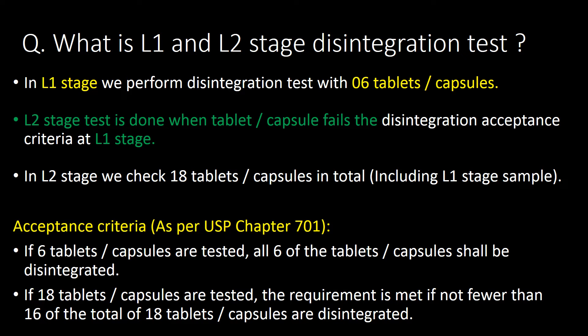What is L1 and L2 stage disintegration testing? In the L1 stage, we perform the disintegration test with 6 tablets or capsules. The L2 stage test is done when a tablet or capsule fails the disintegration acceptance criteria at the L1 stage. In the L2 stage, we check a total of 18 tablets or capsules, including the L1 stage sample. Acceptance criteria as per USP chapter 701: if 6 tablets are tested, all 6 shall disintegrate; if 18 tablets are tested, not fewer than 16 of the 18 tablets or capsules must disintegrate.